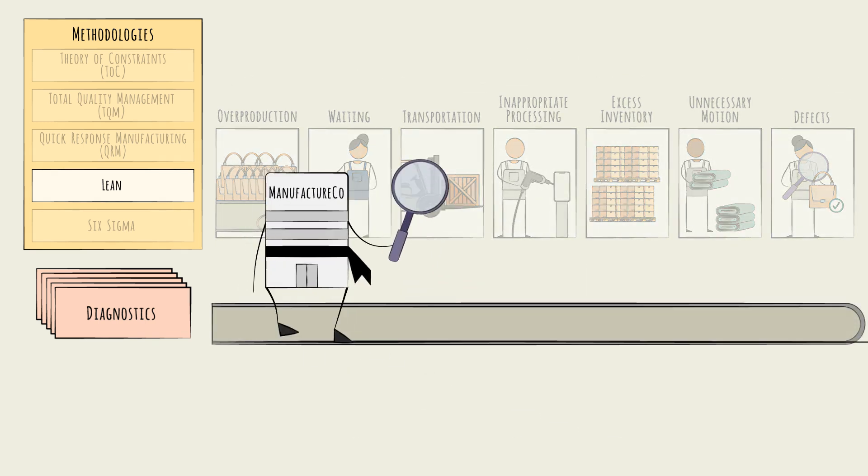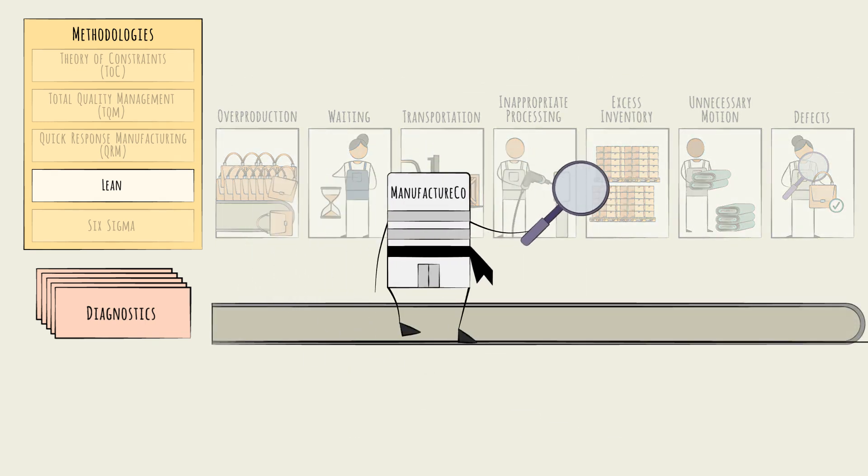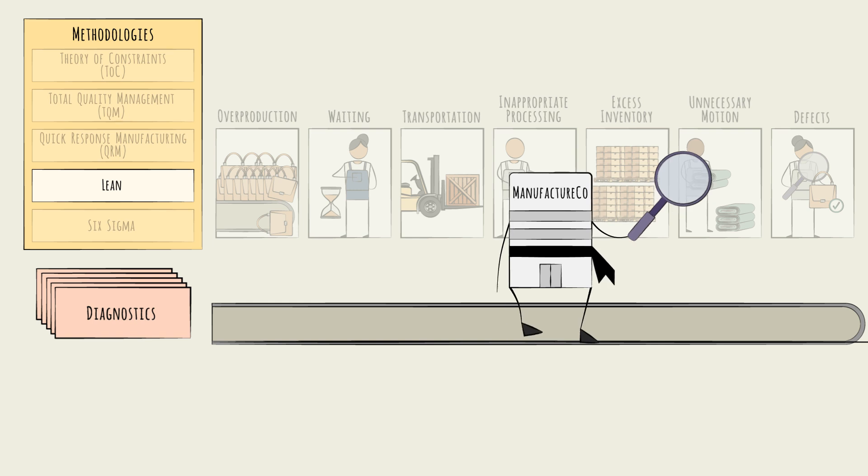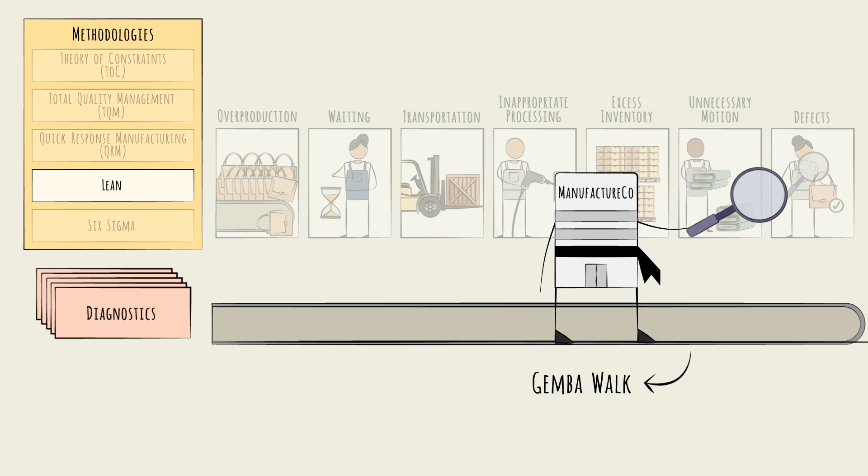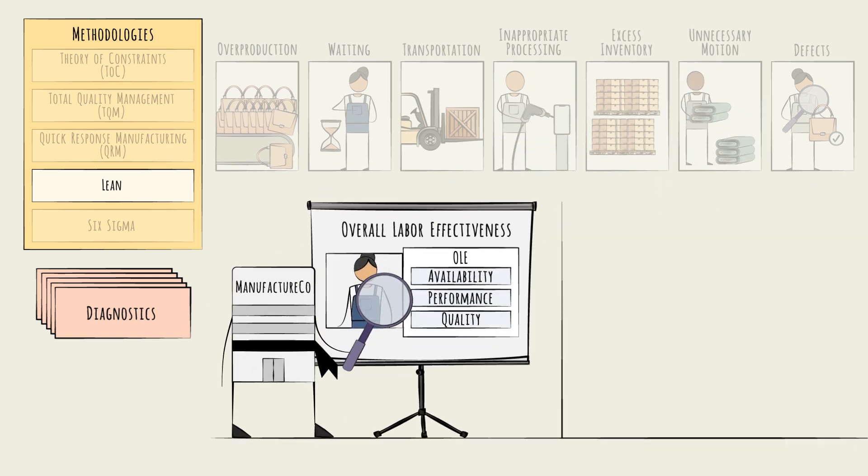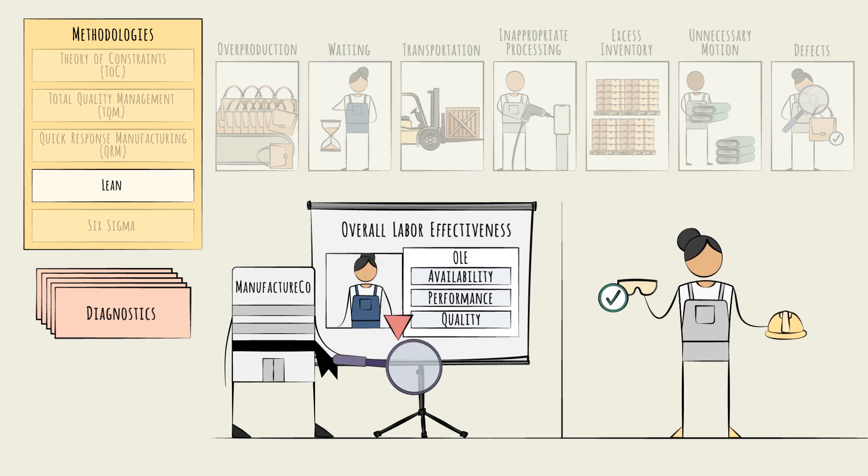To spot wastes, Lean encourages direct observations via daily walks through the factory floor. These are called Gemba walks. In our example, company plant managers will be looking for wastes that might be contributing to the drop in OLE. For example, if employees are idling before a shift due to delayed safety checks, that would be a waiting waste, leading to an availability concern.